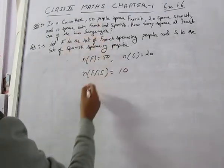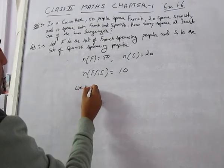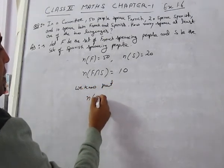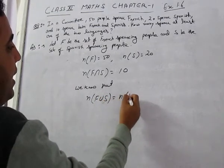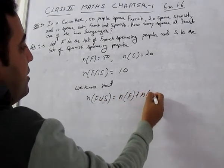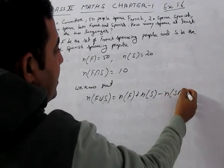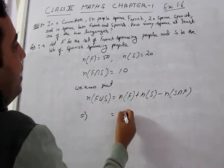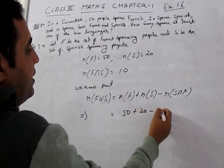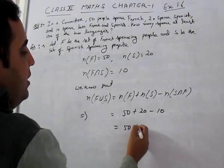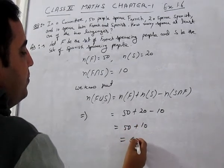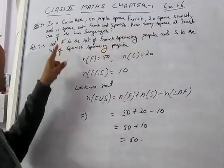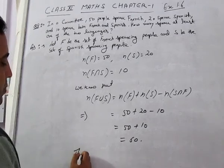Using the formula: n(F∪S) = n(F) + n(S) - n(F∩S). Putting all the values: n(F∪S) = 50 + 20 - 10 = 60. Therefore there are 60 people who speak at least one of the two languages.